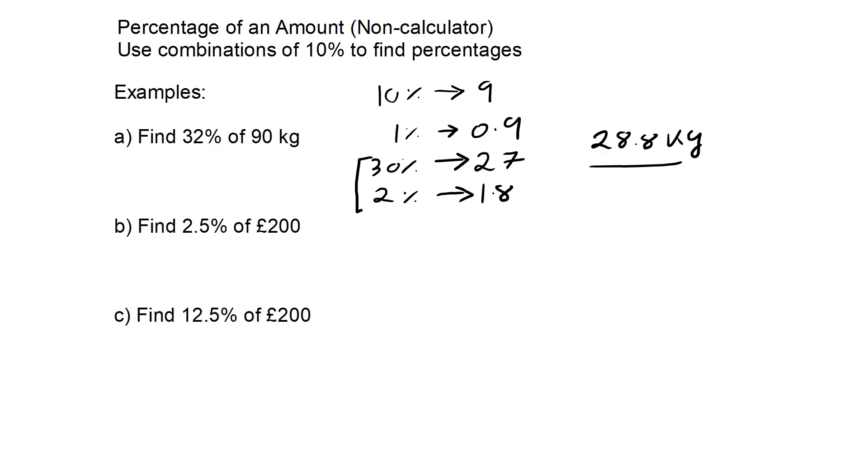To find 2.5% of £200, it looks tricky, but we could do 10%, which is £20. 5% is half of that, which is £10. Then 2.5% is half of 5%, so we halve again to get £5. To find 12.5% of the same quantity, we know 2.5% and 10%, so we add them up. 10% plus 2.5% is 12.5%, which is £25.